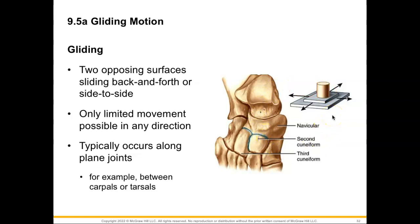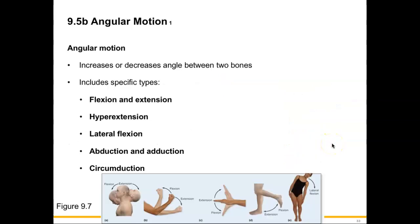It is one of our plane joints. Gliding movement really takes place when we have two opposing surfaces that are sliding back and forth or side to side amongst one another. This is a limited movement possible in any direction, and it's going to occur in our plane joints, which would happen in our carpals and our tarsals.